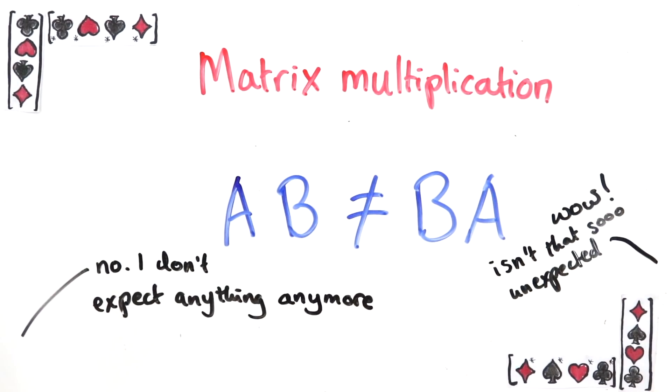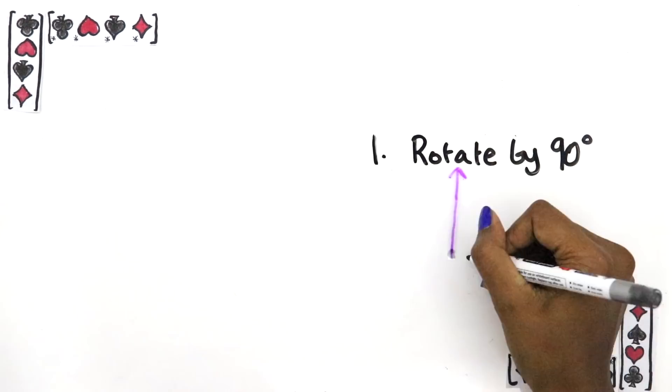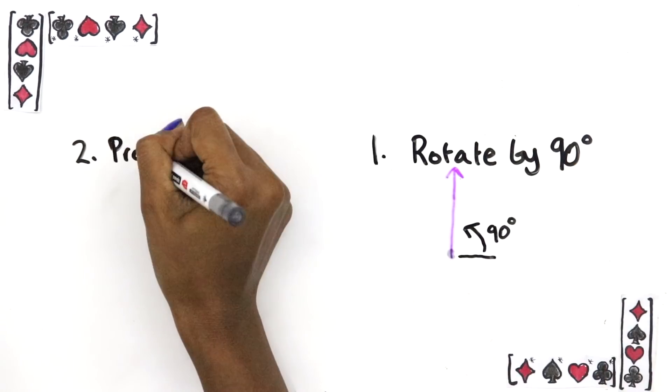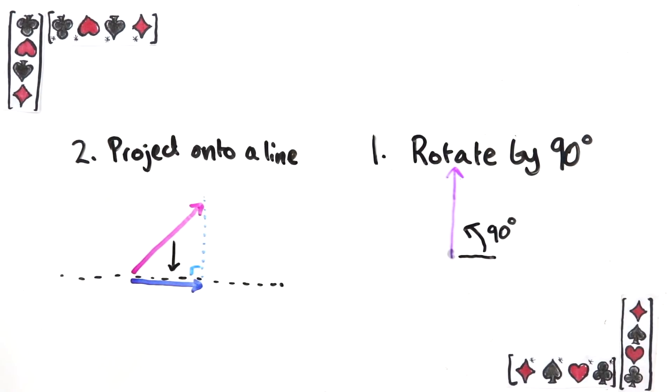Let's look at an example first. Imagine you want to transform some vectors. First you want to rotate them by 90 degrees in the plane. Then you want to project them onto this line like we did earlier. Both of these are linear, so call the matrix representing these transformations in some basis A and B. Then here's a question.